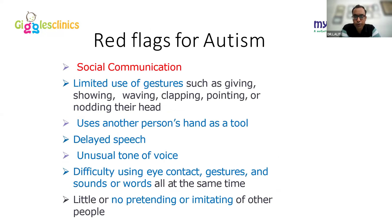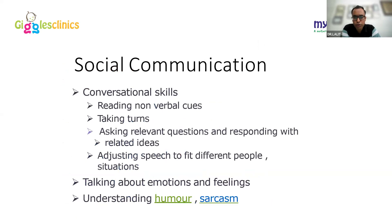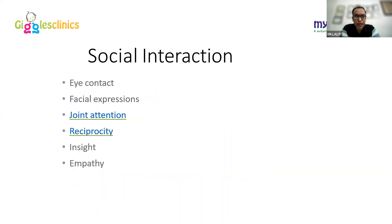Red flag signs of autism include limited use of gestures, using another person's hand as a tool (hand leading), delayed speech, unusual tone of voice, difficulty maintaining eye contact, poor imitation, and poor pretend play. Social communication issues include difficulty with conversational skills, inferential skills, reading non-verbal cues, turn-taking, facial expressions, adjusting speech to different people, and understanding humor and emotions.